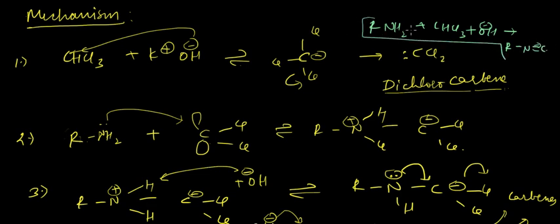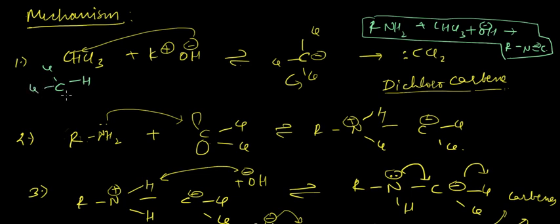Now we discuss the mechanism. In the first step, CHCl₃ is attacked by OH⁻ in the basic medium to form a carbene — specifically dichlorocarbene (CCl₂). The OH⁻ attacks the H on CHCl₃, removing H⁺ from the carbon compound, forming C⁻.